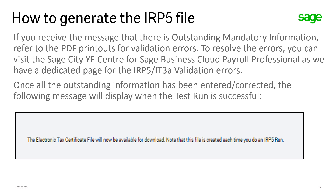If you receive a message that there is outstanding mandatory information, refer to the PDF printouts for validation errors. To resolve these errors, you can visit our dedicated SAGE City Year End Centre for SAGE Business Cloud Payroll Professional, as we have a page that outlines all the common IRP5 IT3A validation errors with possible solutions. Once all the outstanding information has been entered and corrected, the following message will display when the test run is successful.